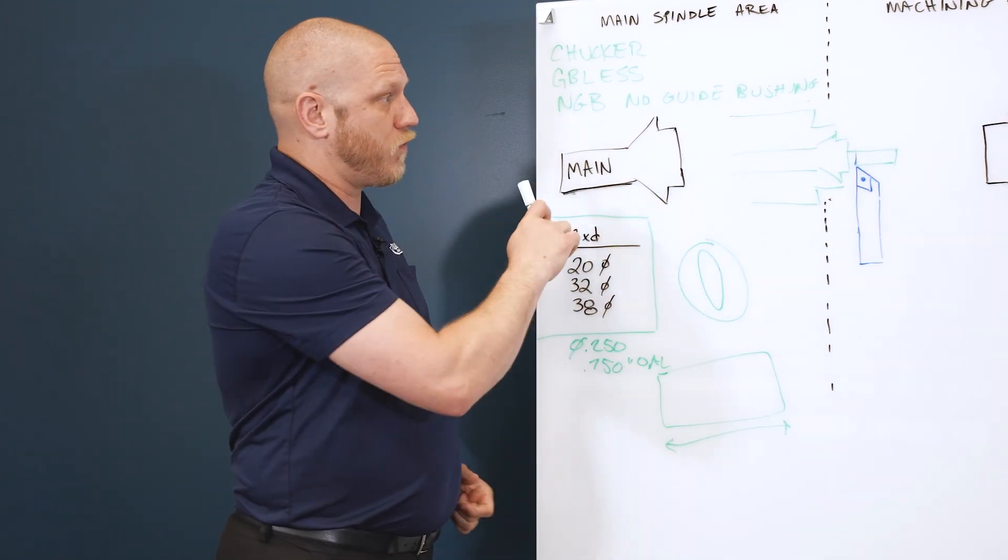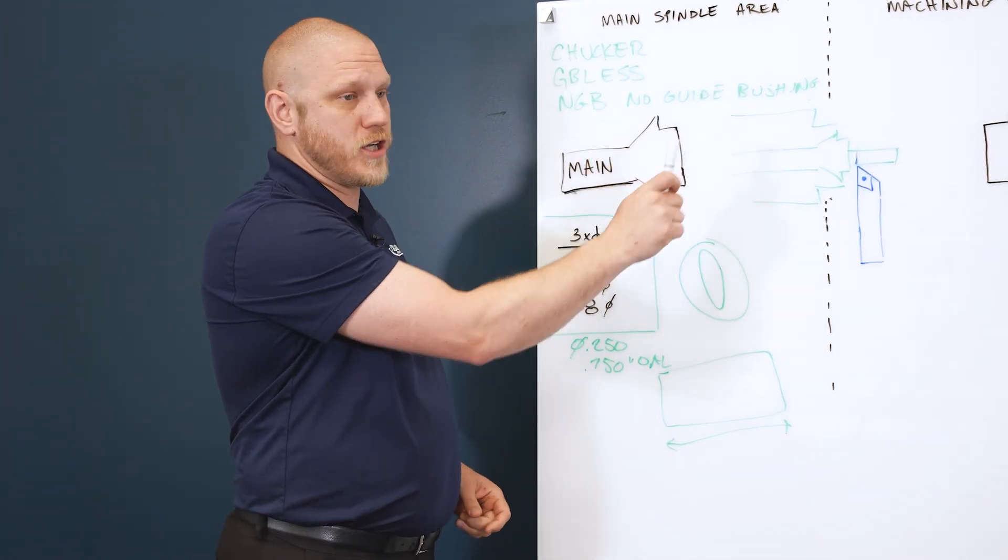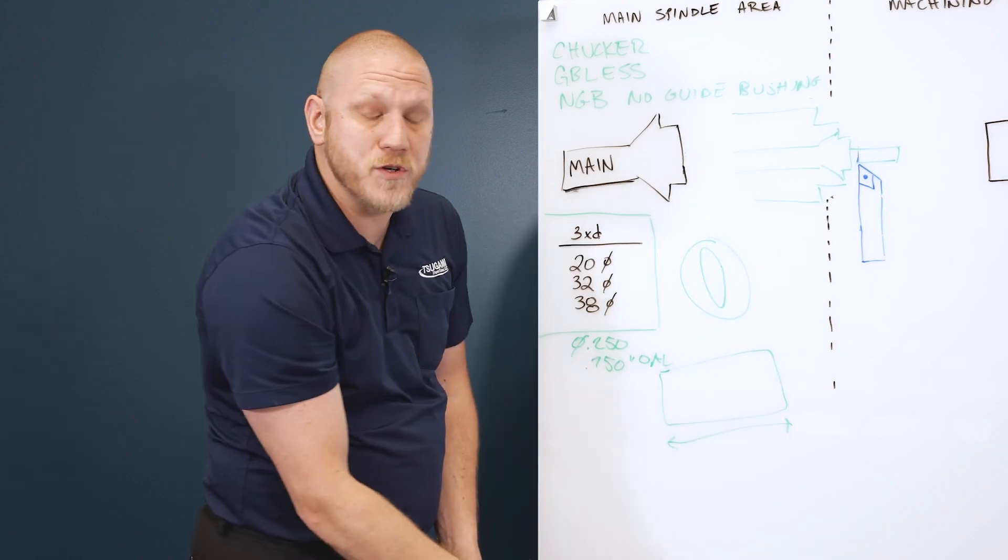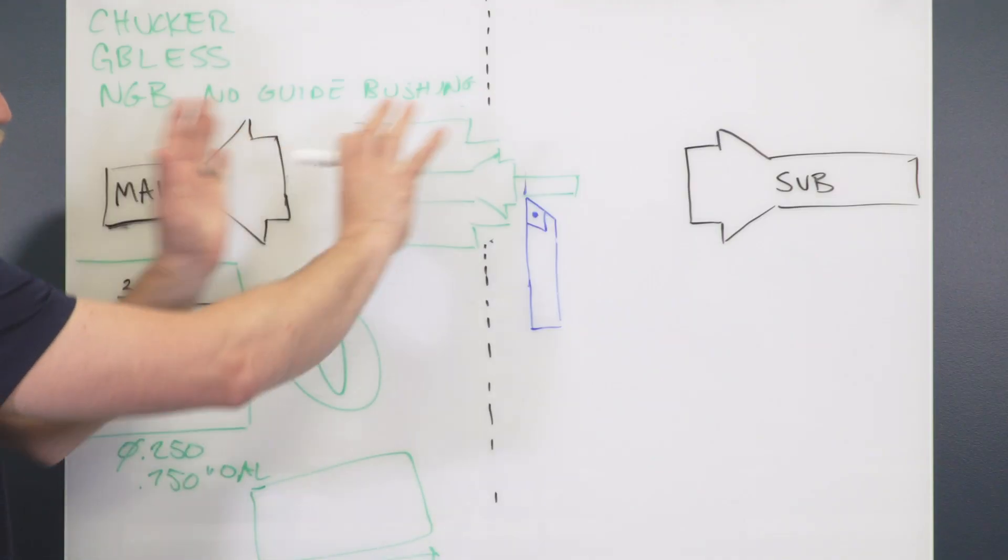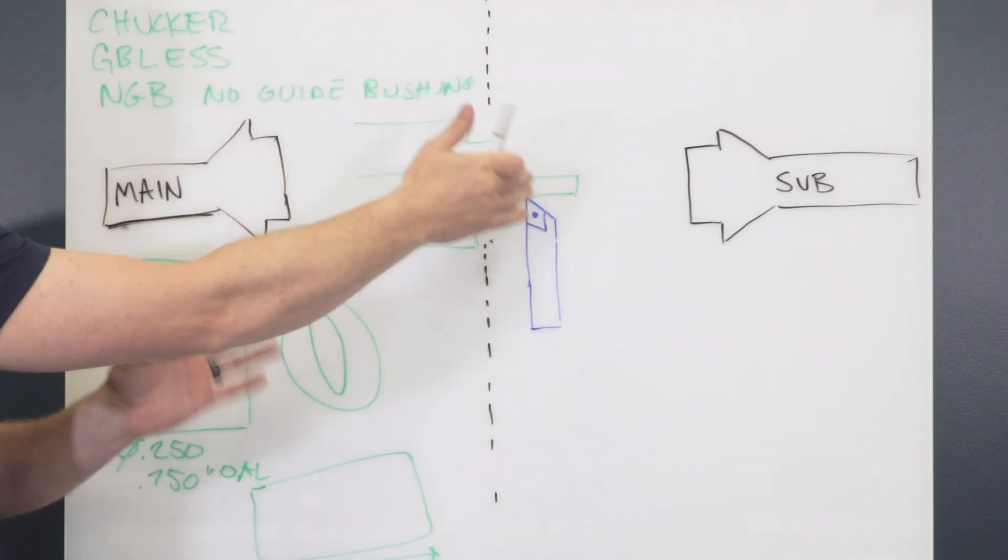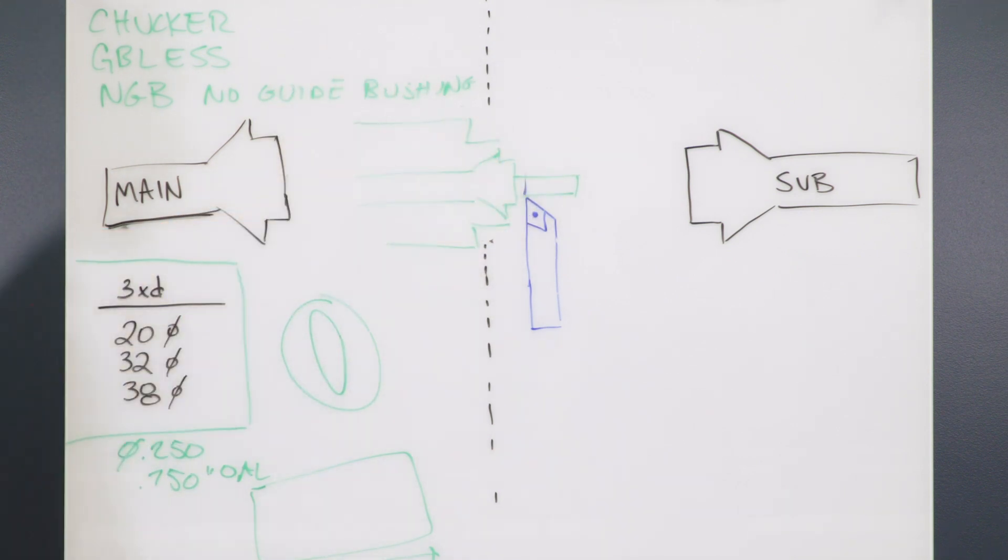This is just a general overview of what is the difference between guide bushing mode and chukar mode. That is: remove the guide bushing motor, bring that main spindle all the way forward, and you can actually cut with the main spindle in the cutting area.